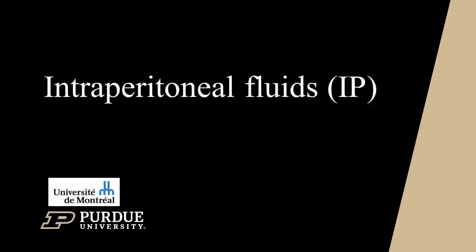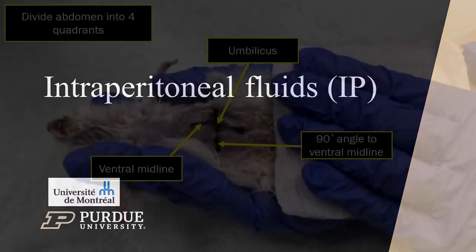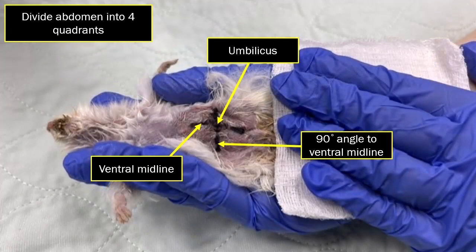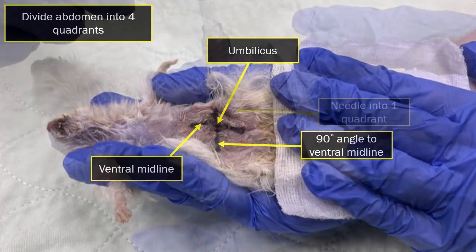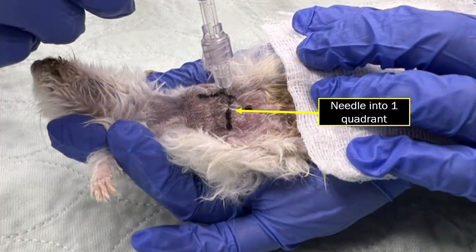Inserting a hypodermic needle or catheter into the peritoneal cavity allows for administration of fluid or blood products, plasma, or red blood cells. The needle is placed periumbilically in mammals within a 1–2 cm radius from the umbilicus.